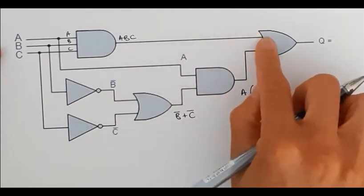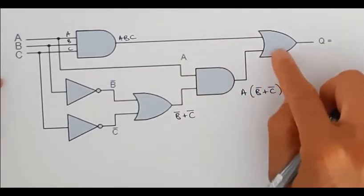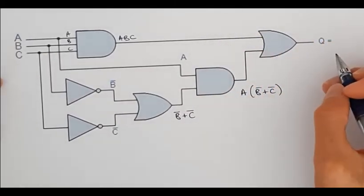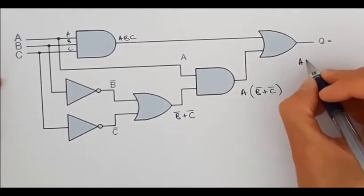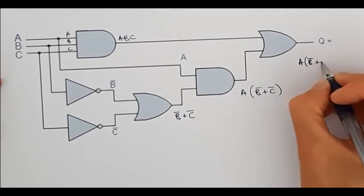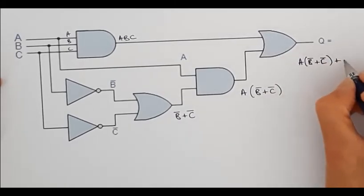And then finally I've got this coming in here and this coming in here. This is an OR gate so my final expression is going to be A·B·C + A·(B̅ + C̅).